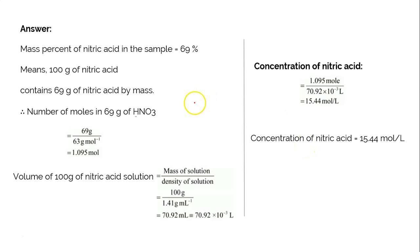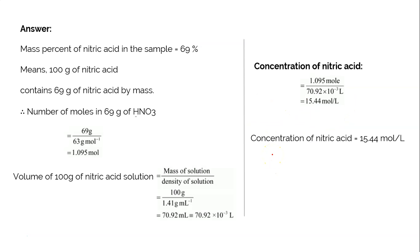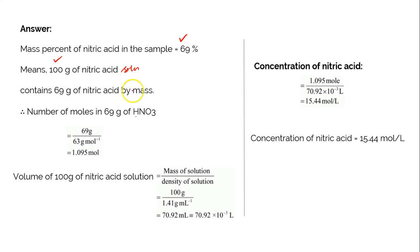So how do we acquire the number of moles from the given data, and how do we acquire the volume, so that we can substitute the values in the molarity formula? The mass percentage of nitric acid is given as 69 percent by mass, which means if you are talking about a solution of 100 grams, 69 grams is nitric acid HNO3 and the rest is water. So now you have 69 grams of HNO3 by mass.